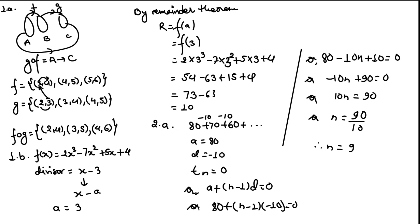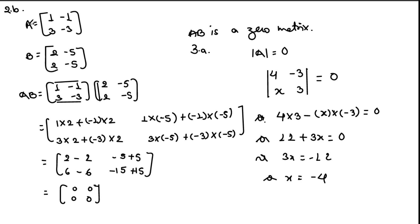Question 2b: given matrices A = [[1, −1], [3, −3]] and B = [[2, −5], [−5, 2]], what type of matrix is AB? We multiply A and B, and we get [[0, 0], [0, 0]], meaning AB is the zero matrix.